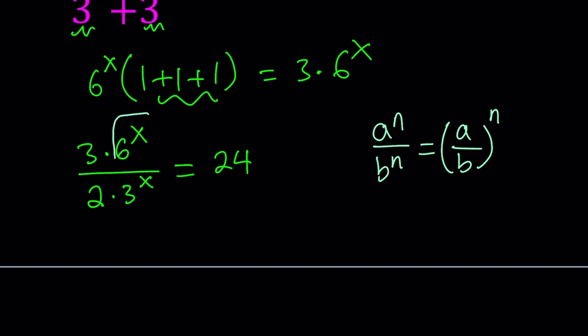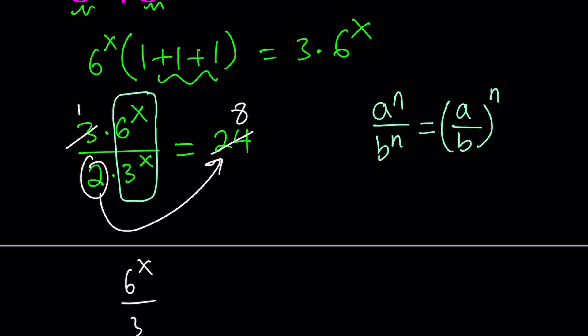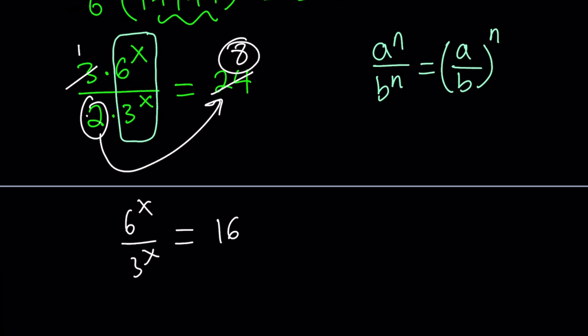To take care of the numbers, I use cross-canceling. For example, 3 goes into 24 eight times—I'll just divide both sides by 3. This becomes 1; do you have to write it? I don't think so, but let's write it. We have a 2 here, and we can cross multiply. You don't have to cross multiply everything—you can keep it like this and then multiply 2 times 8 to get 16. It can be done like that too, partially.